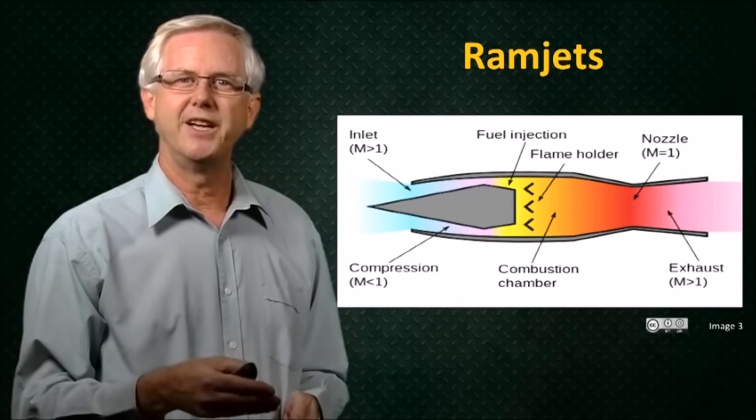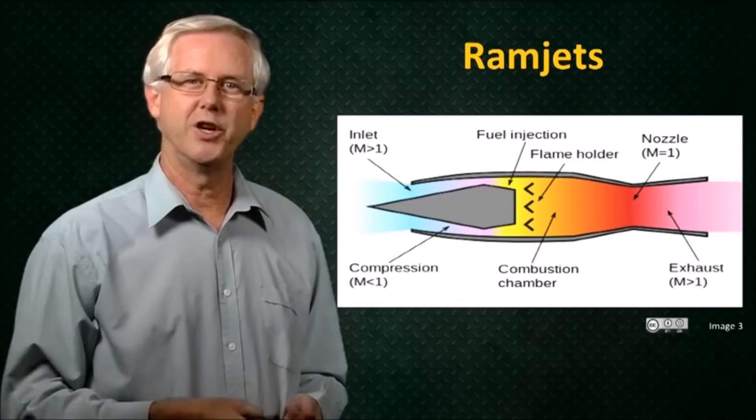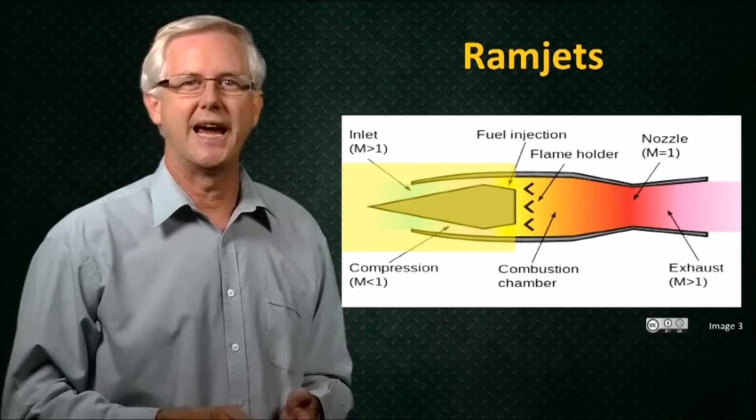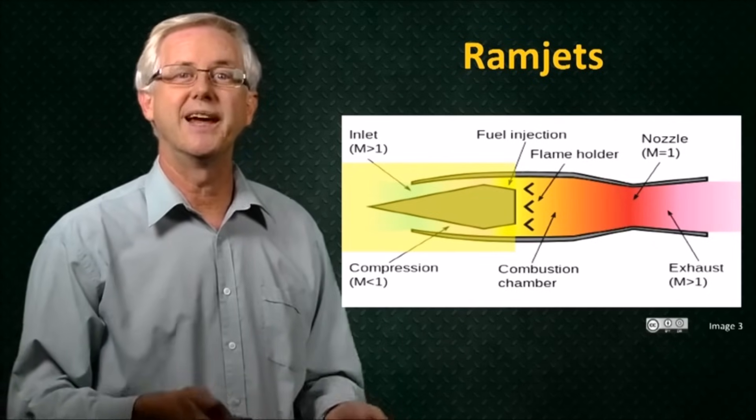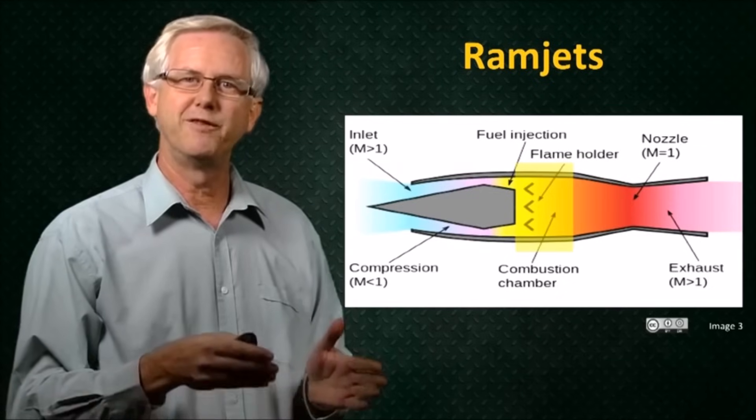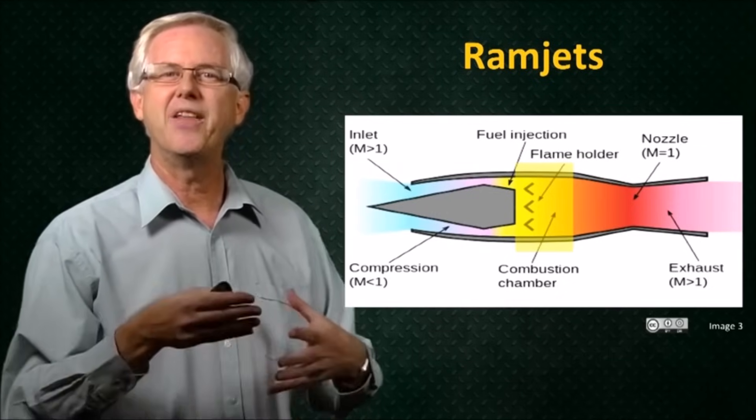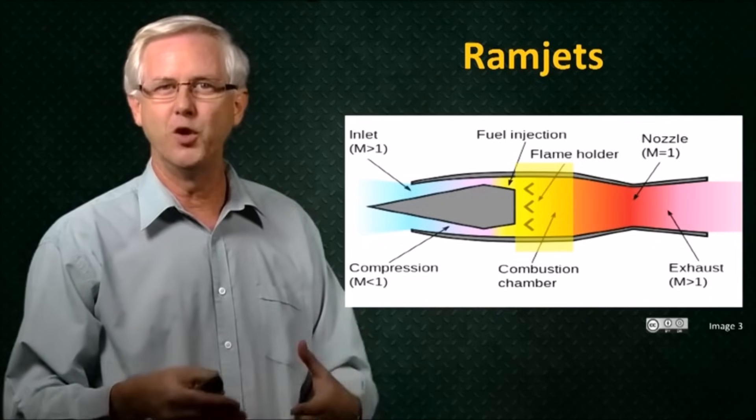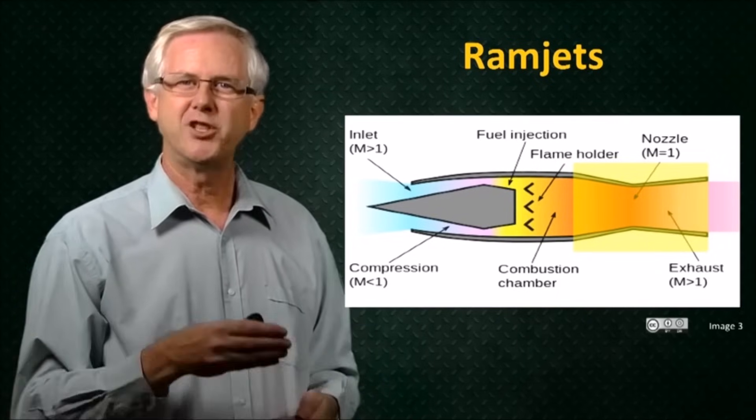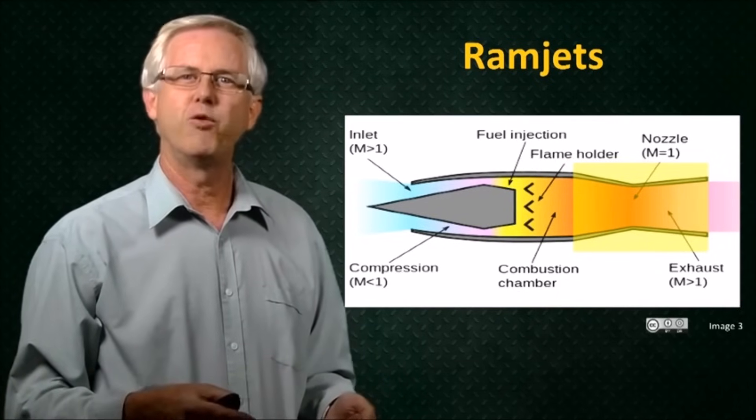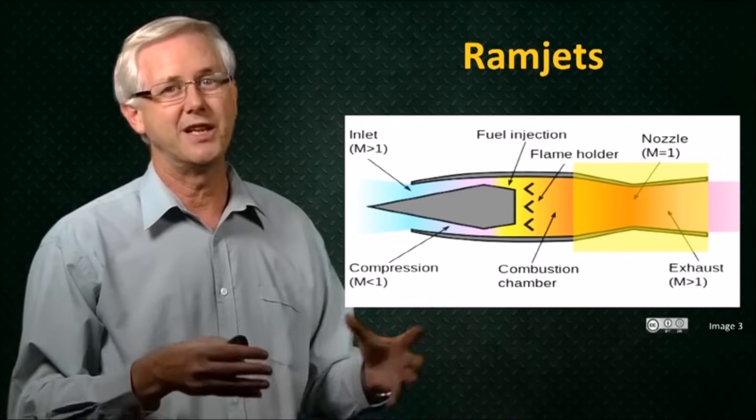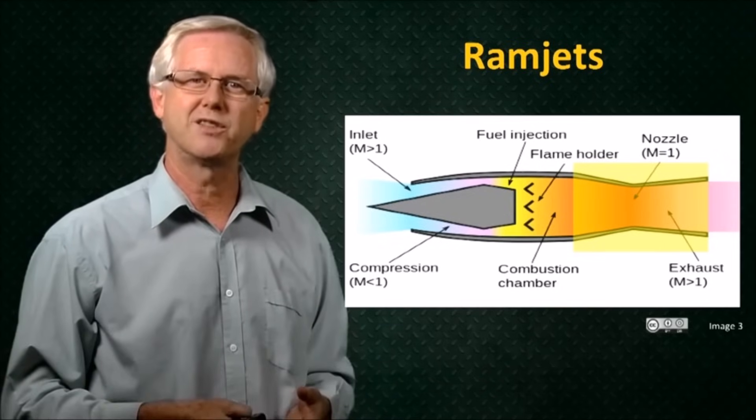So a ramjet is a jet engine without a compressor or a turbine. The ramjet has an inlet to take the air in and slow it down. In so doing, the inlet raises the pressure and temperature of the air. We then inject some fuel in the combustion chamber, and we add the energy of the combustion of the fuel to the flow. And then we exhaust the gas through a nozzle. And just as with the jet engine, if we can produce a flow coming out of the nozzle at a higher momentum than it came into the engine, we can potentially produce thrust from the engine.